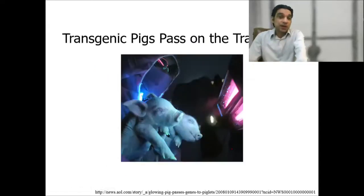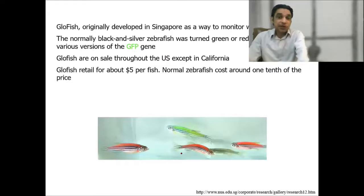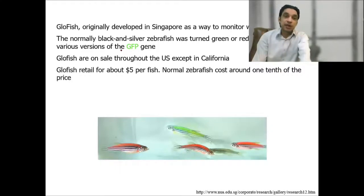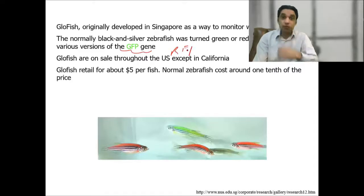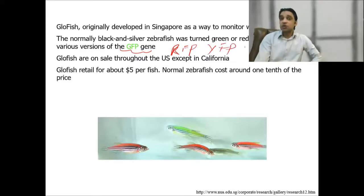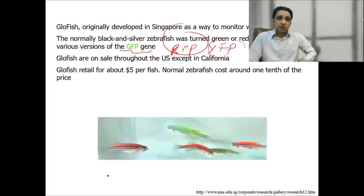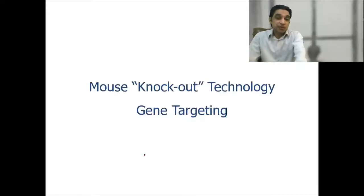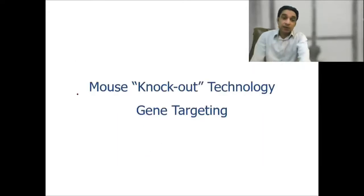Transgenic pigs and fish were also created — just for fun and decoration. GFP was added, RFP was added. Remember there are alternate versions: RFP, YFP. Different color proteins were incorporated into fish just to make them more beautiful and expensive using transgenic technology. The other way is removing a gene, which is called knockout.